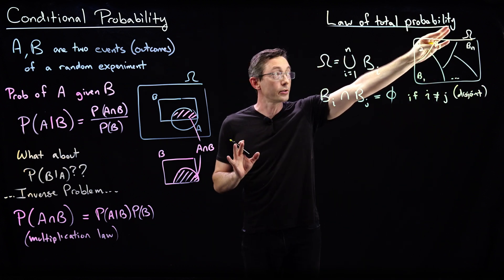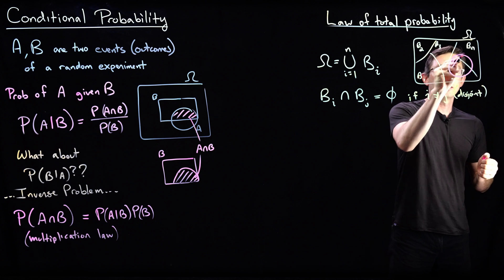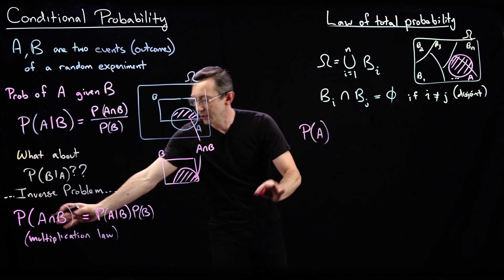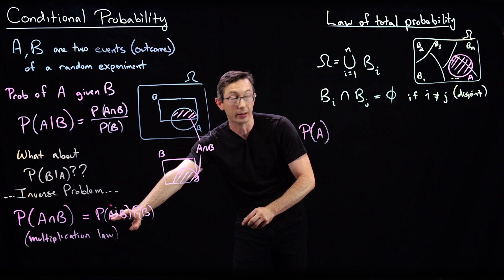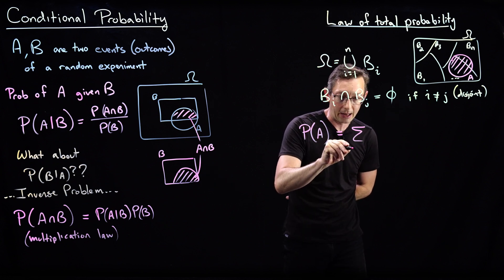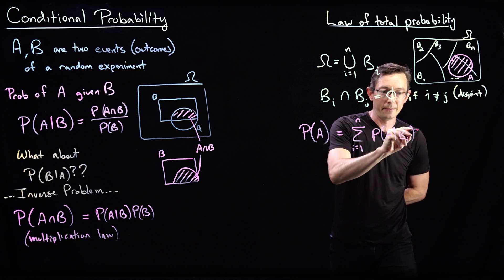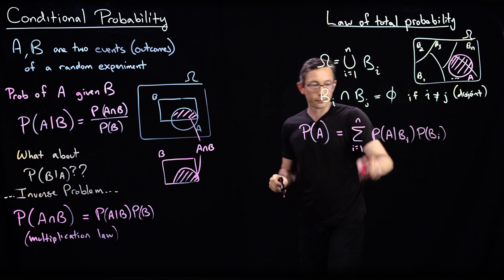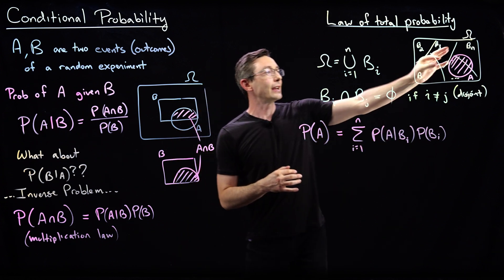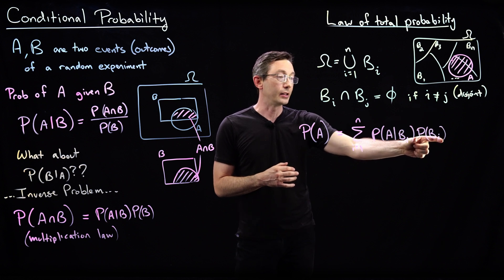If we break our sample space into a bunch of disjoint sets, then the law of total probability says: if I have some event A, the probability of A occurring can be computed by summing up all the conditional probabilities over every disjoint set. It's the sum from i equals 1 to N of the probability of A given subset Bi times the probability of subset Bi happening. This is the law of total probability.